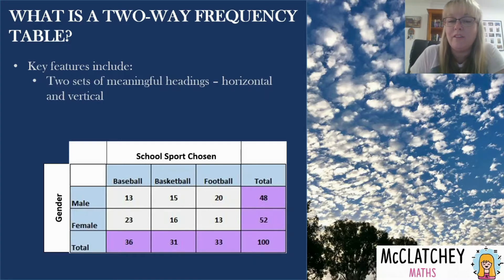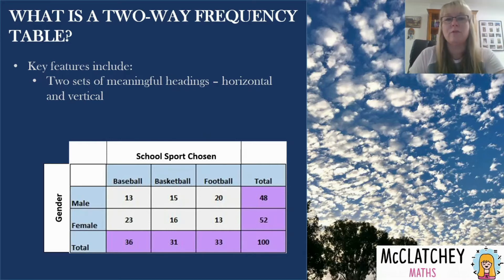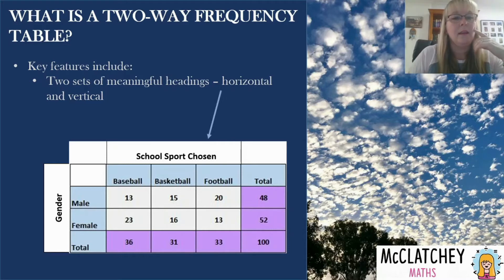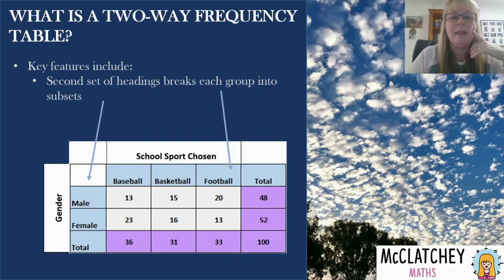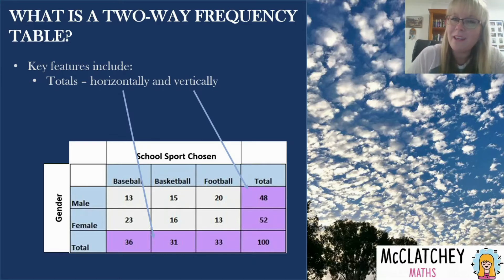Some key features of a two-way frequency table: firstly, you've got two sets of meaningful headings. The word 'meaningful' matters because sometimes people just write 'sport' — but it's better to specify, for example, 'school sport chosen.' You've got headings on the vertical and on the horizontal, and there are two sets: headings and subheadings that break the first group into more subsets. We've also got totals along the bottom and along the right-hand side — very important, as students sometimes forget the second set of totals and lose marks.